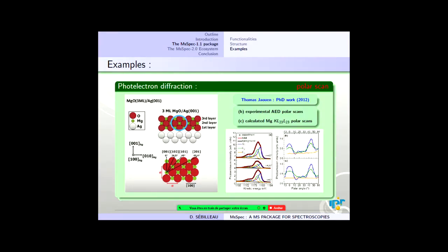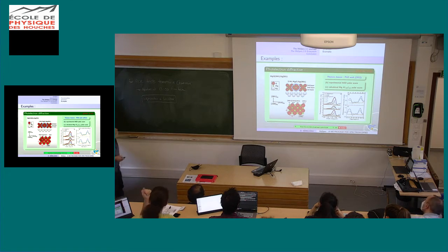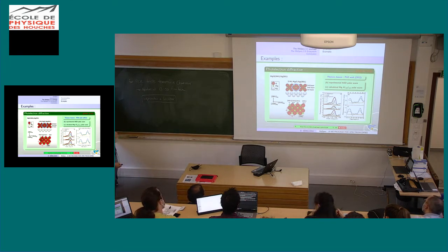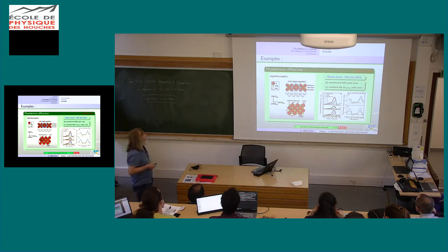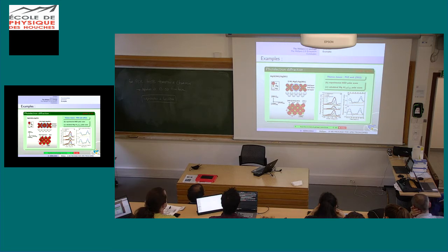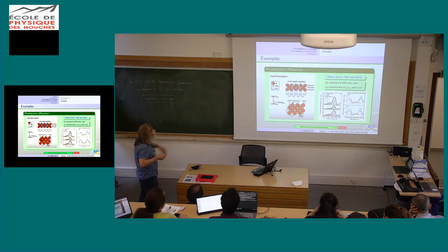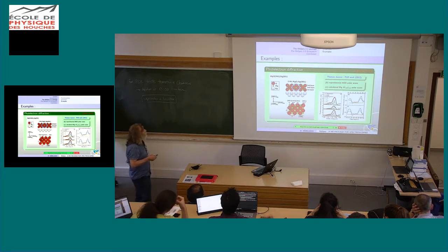A practical example: this is part of the PhD work of Thomas Jaouen, who is now in our group as a CNRS researcher. The idea was to test the method in order to learn about incorporation of magnesium at the interface between silver and magnesium oxide. First, the test was made on three monolayers of magnesium oxide on silver.